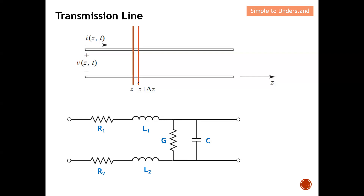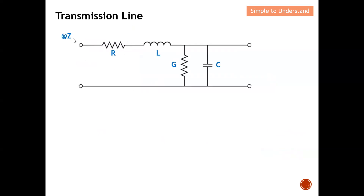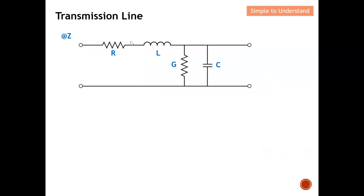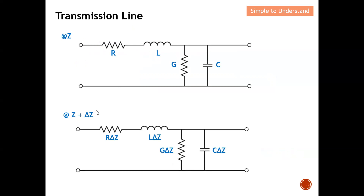From this schematic I can combine the two resistors R into one and the two inductors into one, simplifying the lumped element model. This simplified form represents the circuit at point z. To represent the transmission line at z + Δz, I factor all elements into the lumped model. This is the lumped element used to represent a small section of the transmission line.